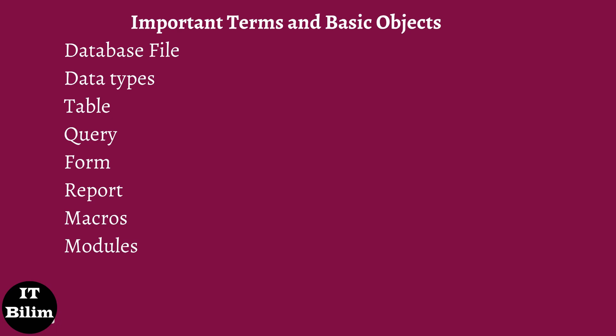Macros: macros are mini computer programming constructs. They allow you to set up commands and processes in your forms, like searching, moving to another record, or running a formula. Modules: modules are procedures and functions which you can write using Visual Basic for Applications.